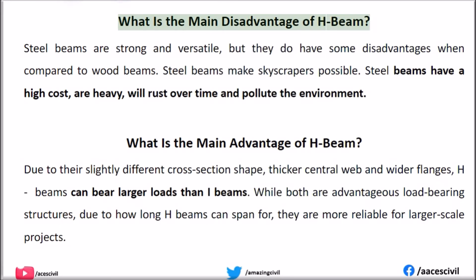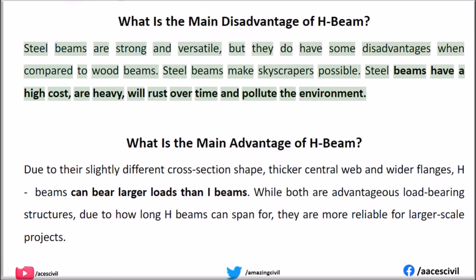What is the main disadvantage of H-beam? Steel beams are strong and versatile, but they do have some disadvantages when compared to wood beams. Steel beams make skyscrapers possible, but they have a high cost, are heavy, will rust over time, and pollute the environment.